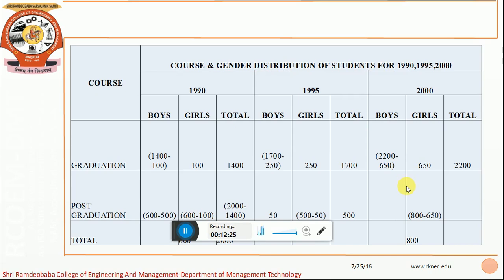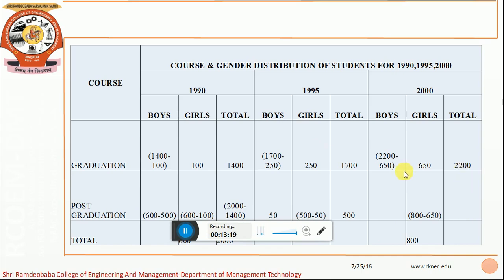Once we have filled in the required data, the next step is identification of the missing values. In 1990, the total number of graduate students are 1400 and girls are 100, so the remaining boys are 1400 minus 100. Total students are 2000 and graduation is 1400, so post graduation is 2000 minus 1400. There are 600 total girls, and 100 girls are doing graduation, so 600 minus 100 would be doing post graduation. By these calculations, we fill up all the missing data and complete this entire tabular data for better interpretation and analysis.